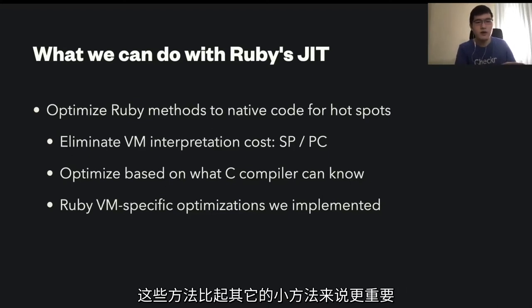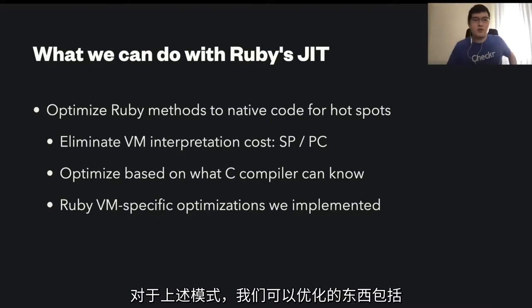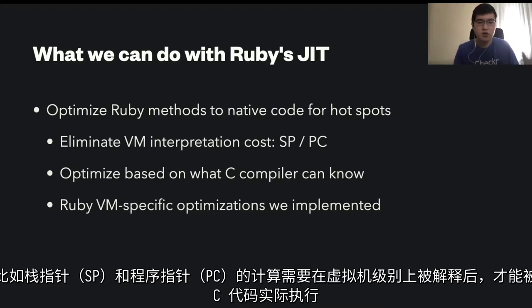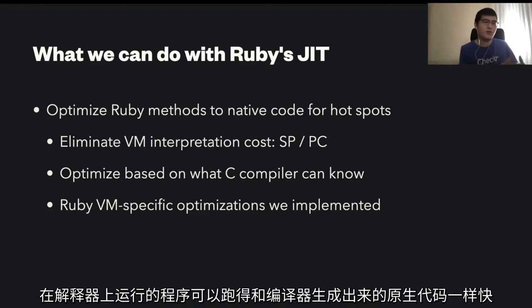There is a reason we do not want to compile all methods — that will be talked about later. With this compiler architecture, what we can do for optimization includes eliminating VM interpretation overhead. Usually, Ruby VM runs by calculating the stack pointer and program counter, which is implemented with C code in Ruby VM. But because we can generate native code, we can remove such interpretation overhead. Technically, by using a JIT compiler, the interpreter can run as fast as compiler-generated native code.